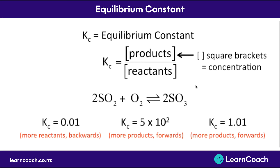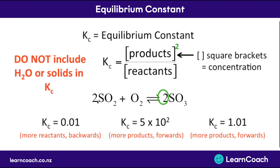We're going to do some calculations, but first we look at how you calculate Kc and you need to look at the number of moles. For this reaction, for example, we look at the concentration of the products — the concentration of SO3 — but because we have two moles of SO3 from our equation, we have to put that number of moles as a power of our products. We'll see how to do this in an example. Finally, do not include water or any solids in your equilibrium constant calculations, otherwise you get the wrong answer — just completely ignore them.